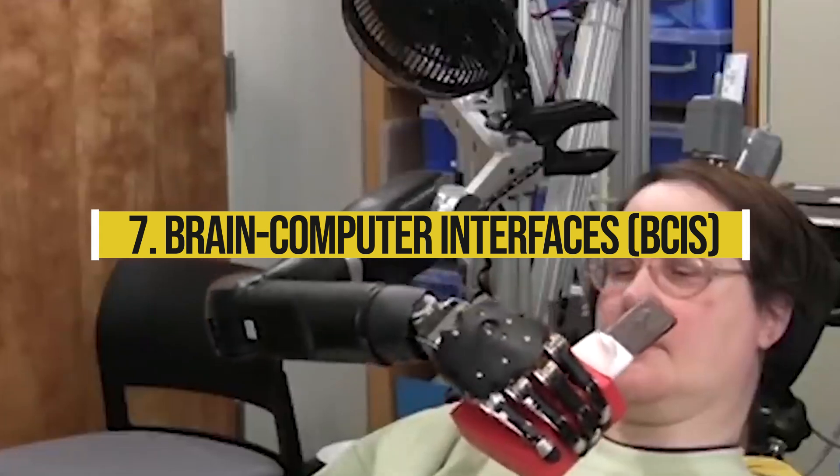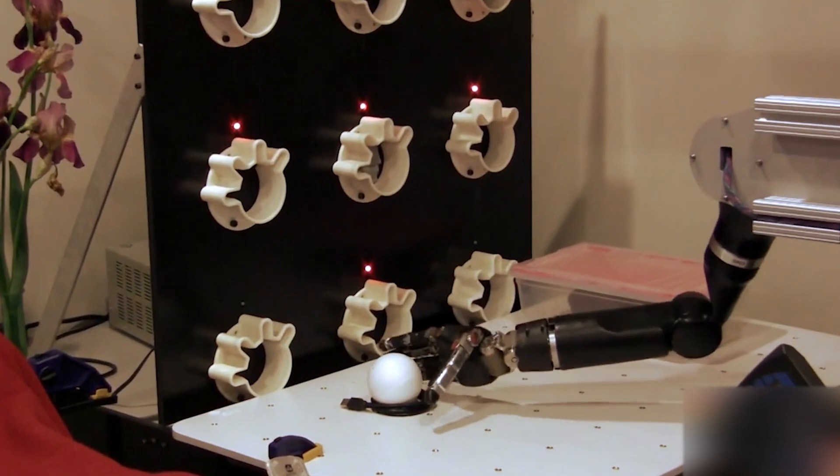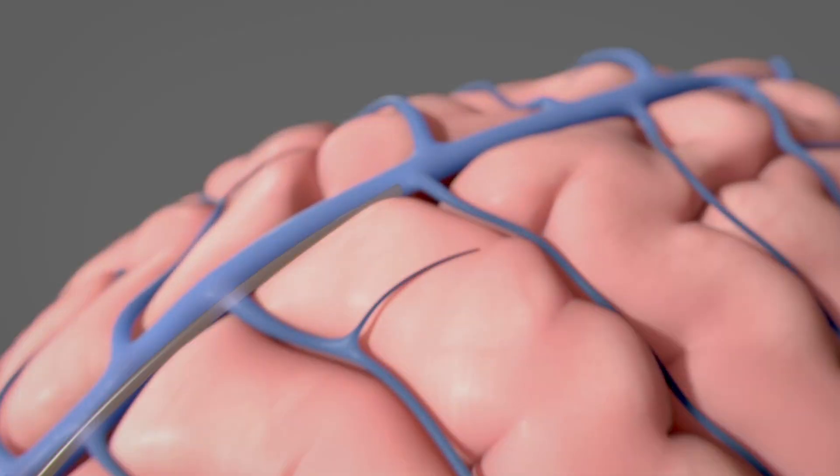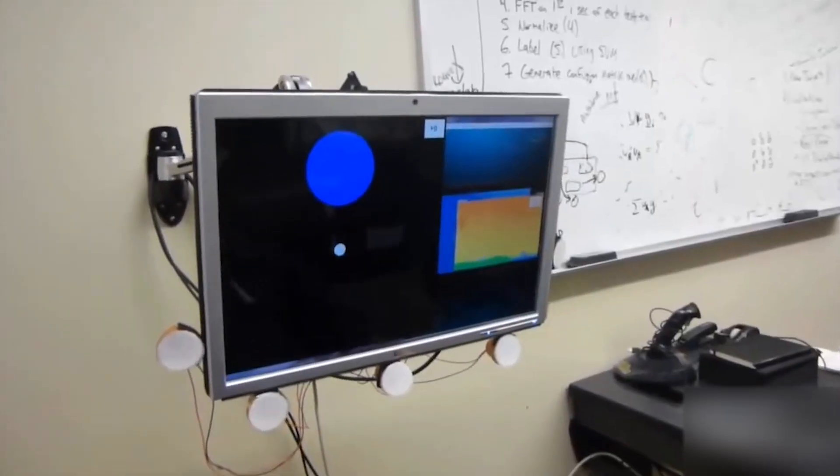Number 7. Brain Computer Interfaces – BCIs. Imagine a world where technology pushes human boundaries to superhuman levels. Brain Computer Interfaces like Neuralink aim to connect our minds directly to computers, allowing us to control devices with thought alone.